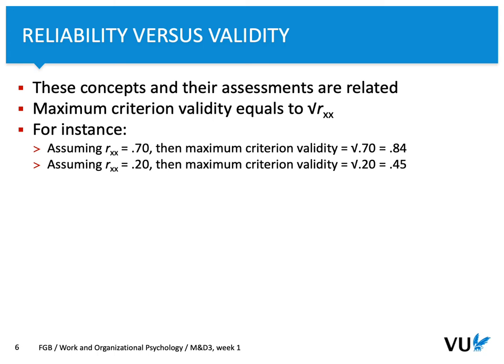Let's look at two examples. First, we want to test validity of test X, and we know its reliability is 0.70. Based on the formula — square root of the reliability coefficient — the maximum criterion validity between test X and test Y would be 0.84. In a second situation, if reliability for test X is 0.20, the potential maximum validity would be 0.45.